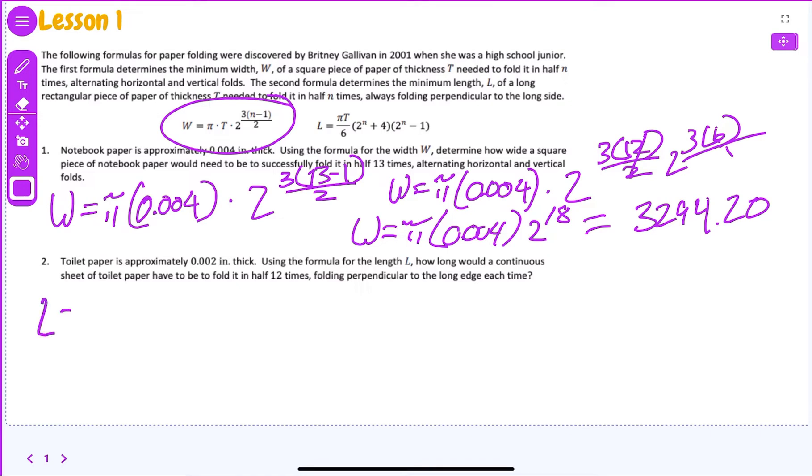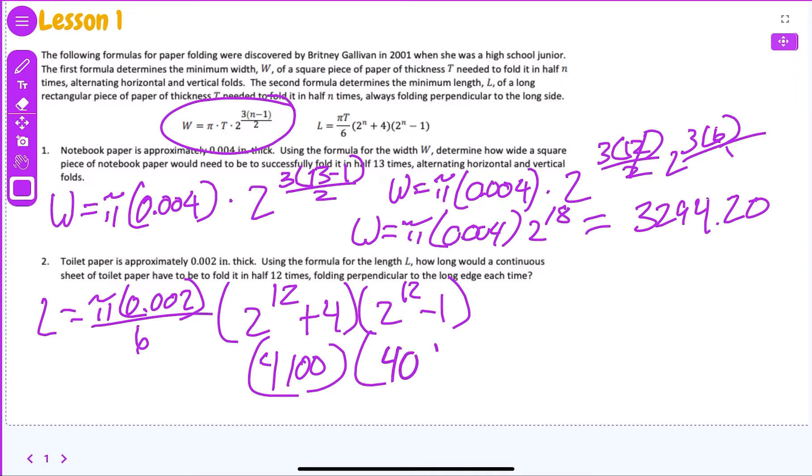Let's work these out. We're going to have L equals pi times t, which is 0.002, divided by 6, times 2 to the 12th plus 4 times 2 to the 12th minus 1. That first number is going to be something crazy, but let's just see what 2 to the 12th is right now. 2 to the 12th is 4096, so 4096 plus 4 is 4100. 2 to the 12th is 4096 minus 1, so that's going to be 4095.